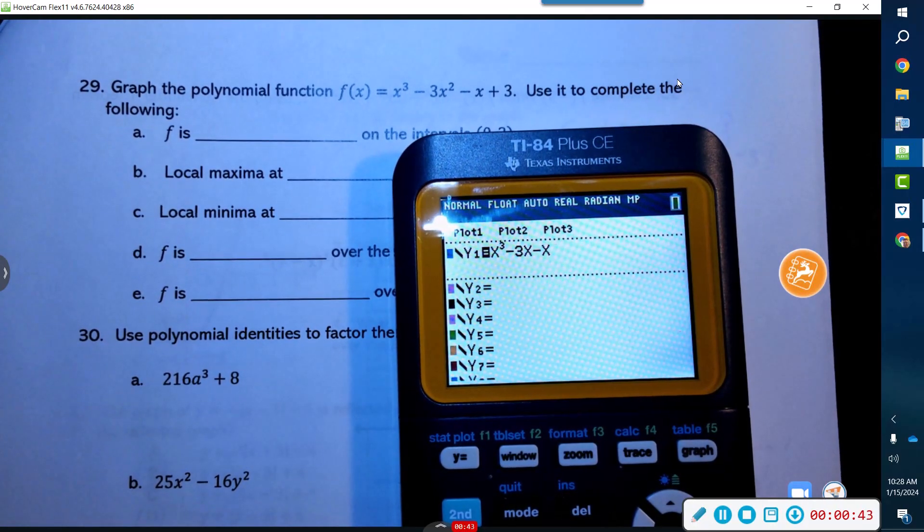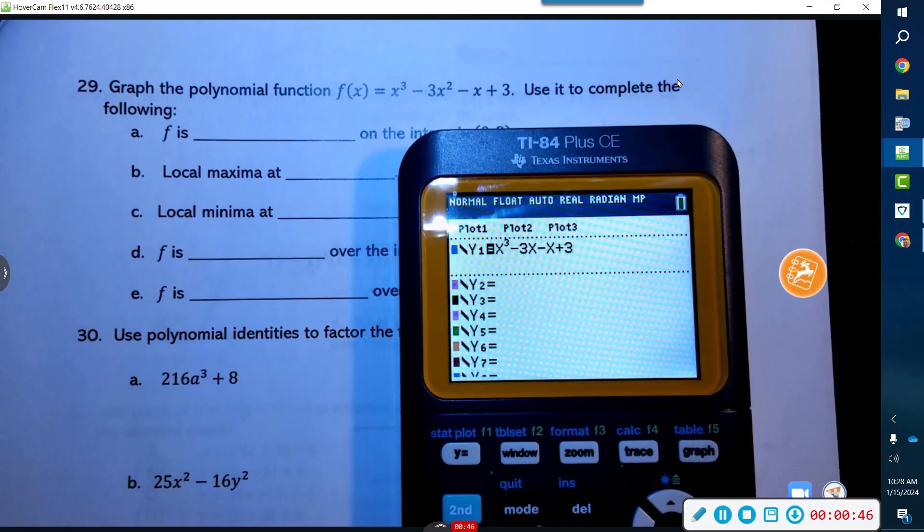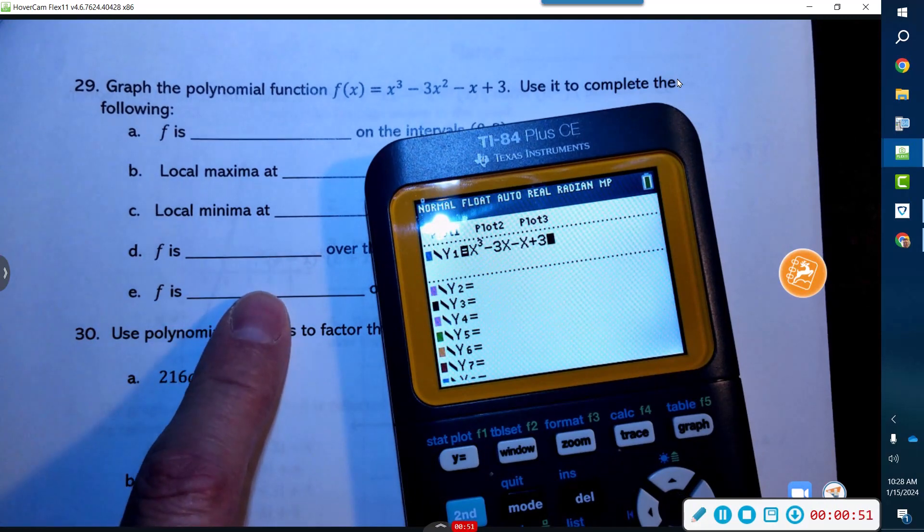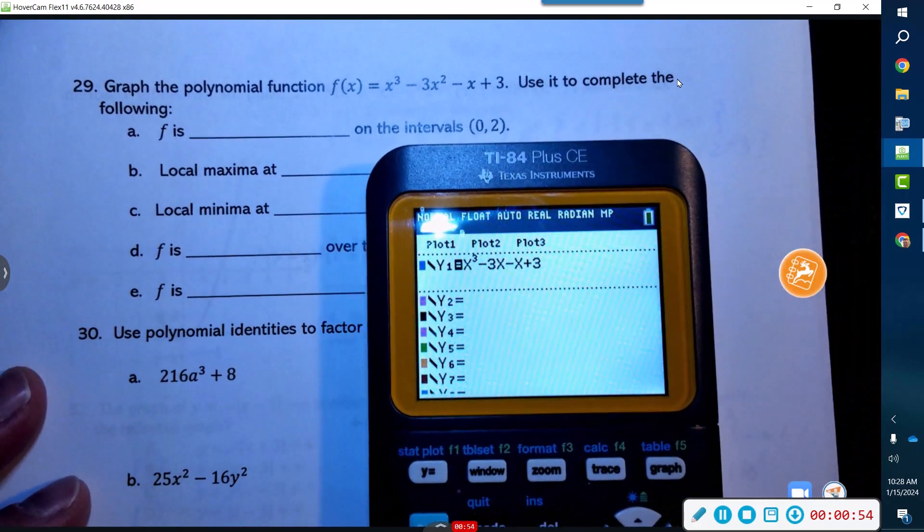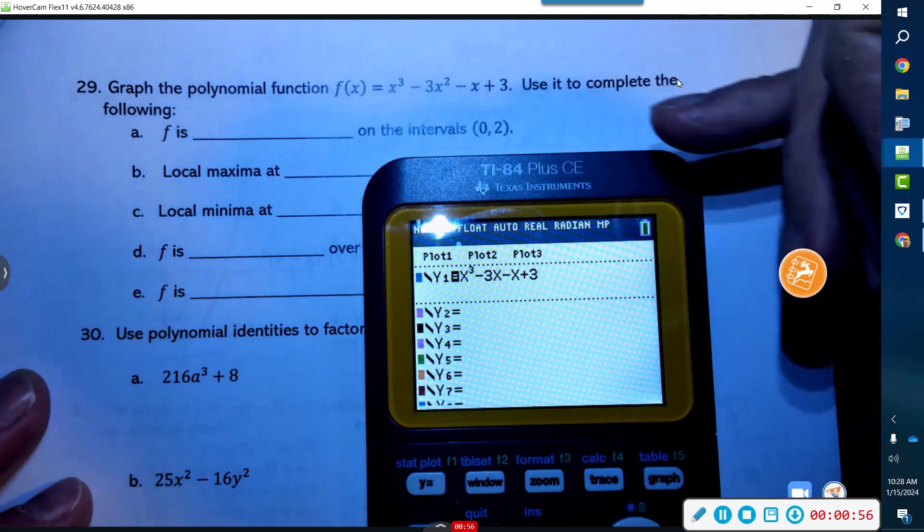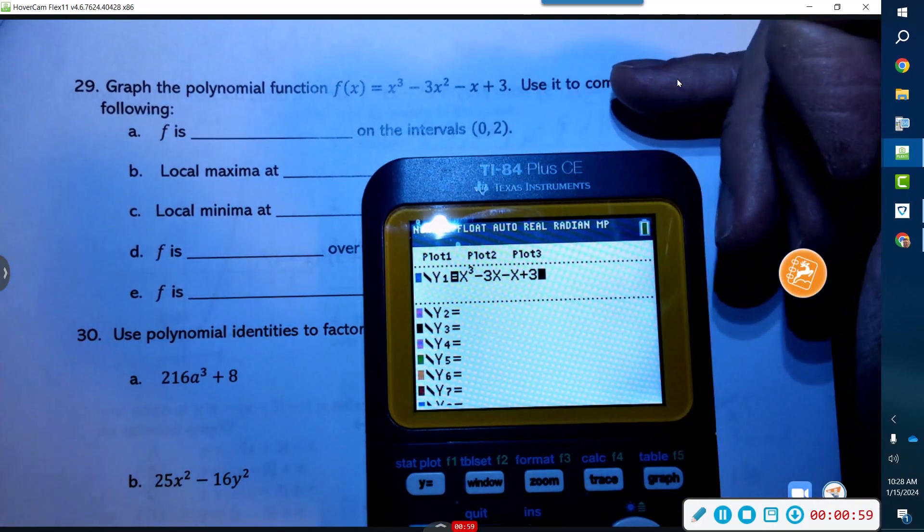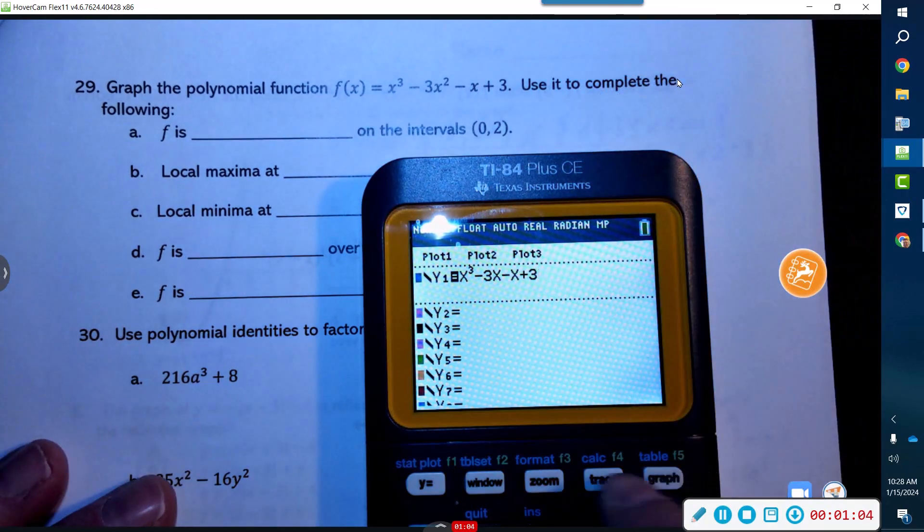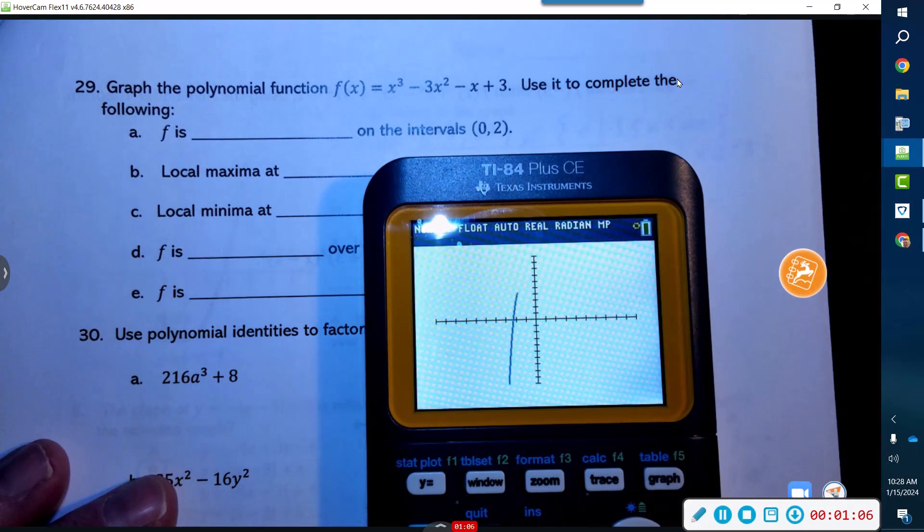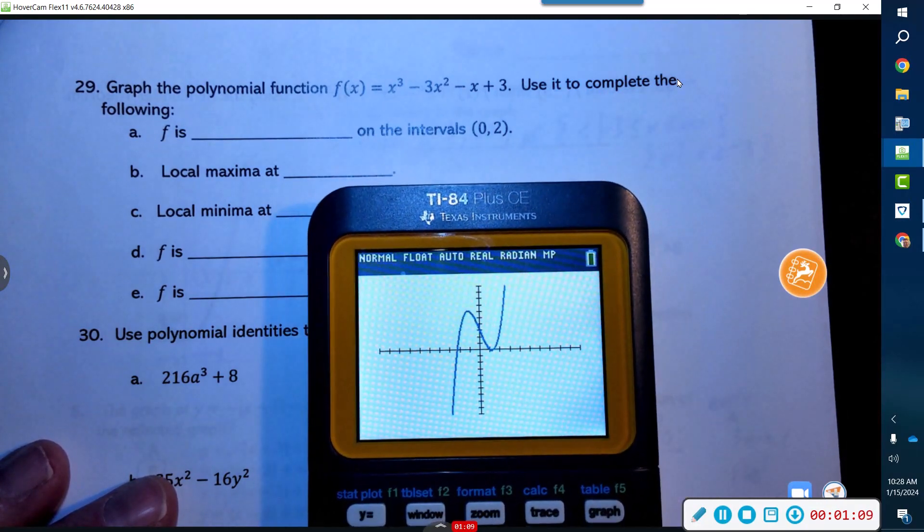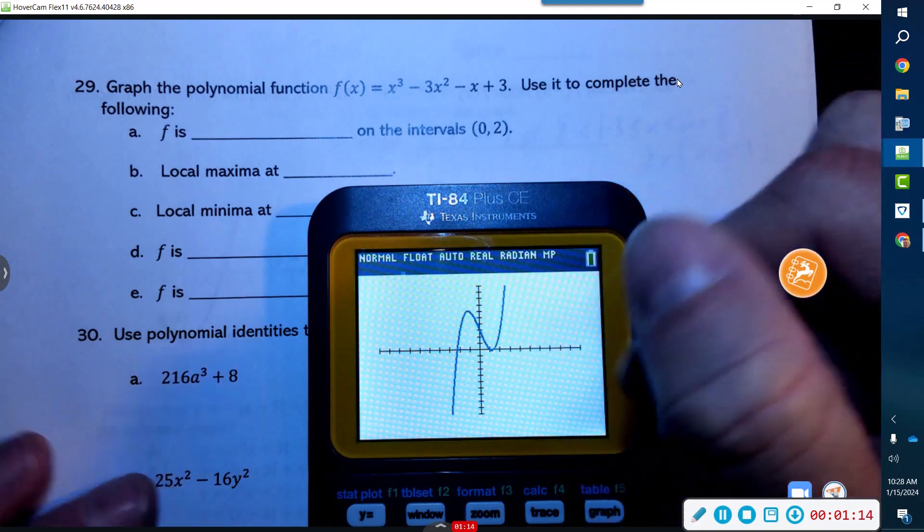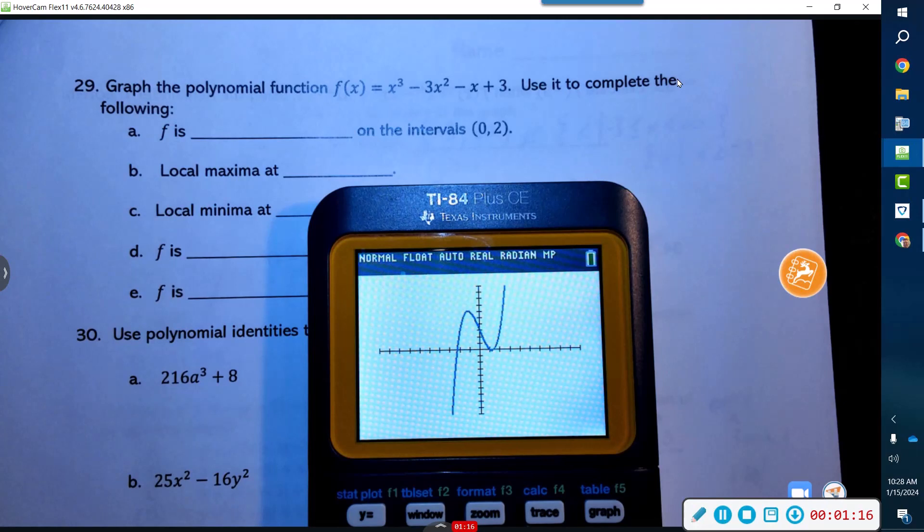As soon as you get off of quadratics, you have to use a lot more advanced techniques to kind of get this information. This information is a lot better to handle by hand with calculus. So when we do this we want to find f is what on the intervals 0 through 2. Let's see what's going on here. Let's go zoom standard. From 0 to 2.